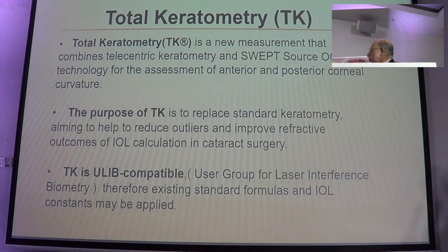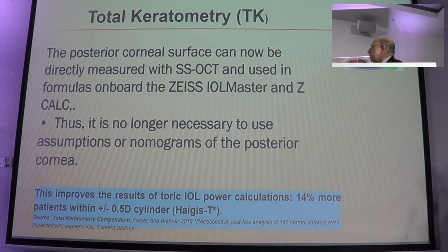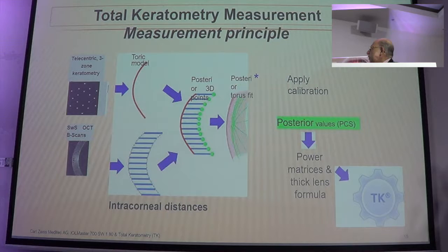Essentially what you need to do is replace static keratometry, which reduces accuracy, as well as spots outside your line of keratometry. It is unit compatible so you can utilize it. It is now found in a number of machines. The total corneal keratometry essentially measures the front, the back, and then calculates the total value.